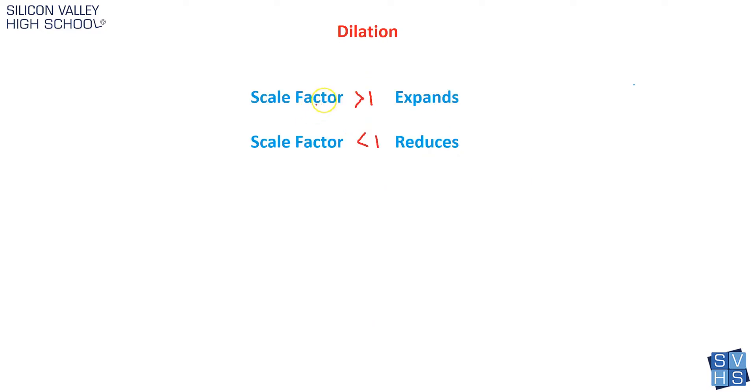So if your scale factor, whatever we're dilating something by, is greater than 1, then your shape will expand. It'll grow. It'll get bigger. And if your scale factor is less than 1, it will shrink. It'll reduce in size. And so that sounds easy at first. You're thinking, well, that's a no-brainer. I can just glance at it and know them, which is true, but let's do a couple.